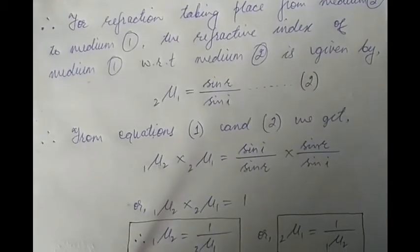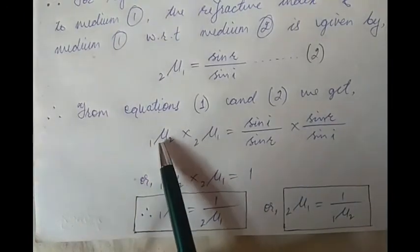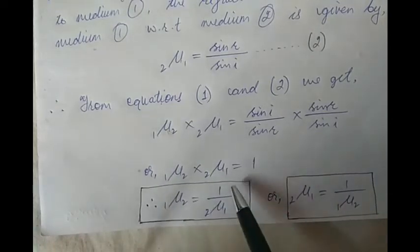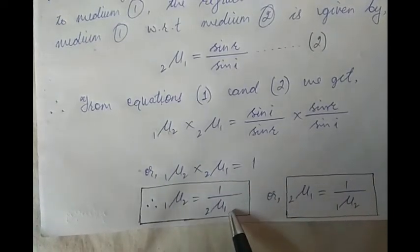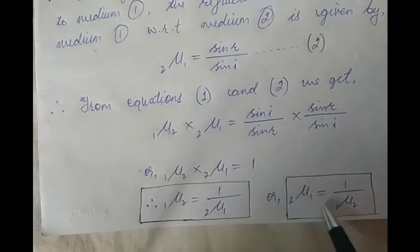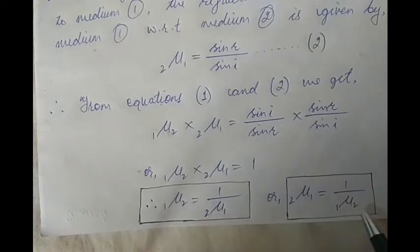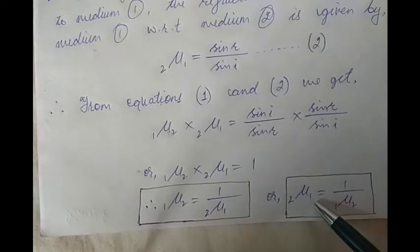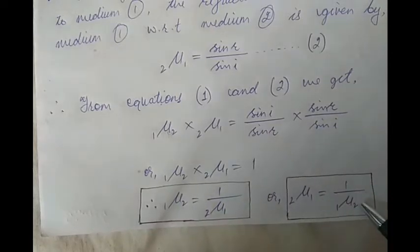From equations 1 and 2, when we multiply them, we get μ₂₁ × μ₁₂ = (sin i / sin r) × (sin r / sin i), which equals 1. Therefore, μ₂₁ × μ₁₂ = 1, meaning the refractive index of the second medium with respect to the first is equal to 1 divided by the refractive index of the first medium with respect to the second. That is, μ₁₂ = 1 / μ₂₁ — they are reciprocals of each other.